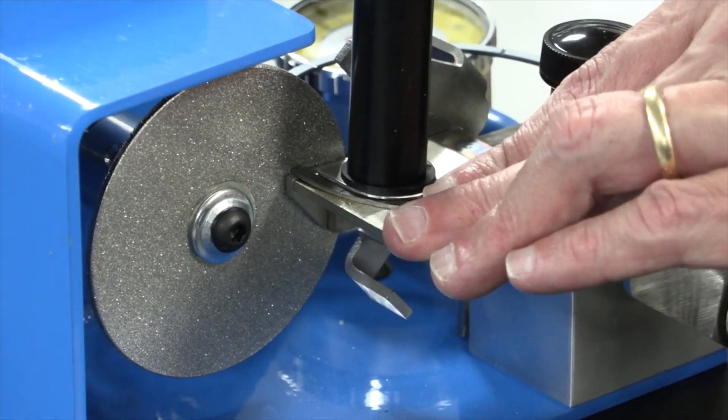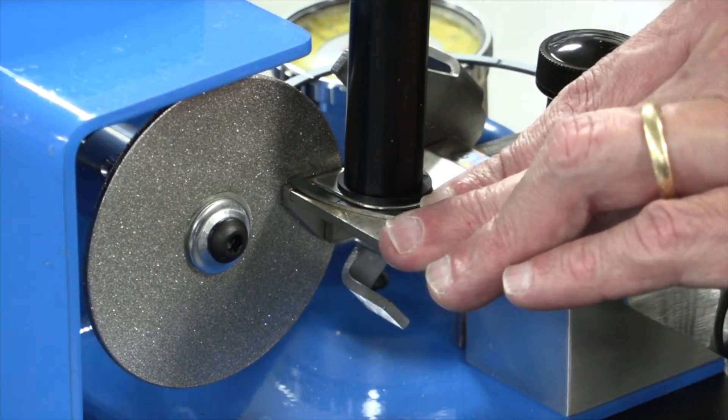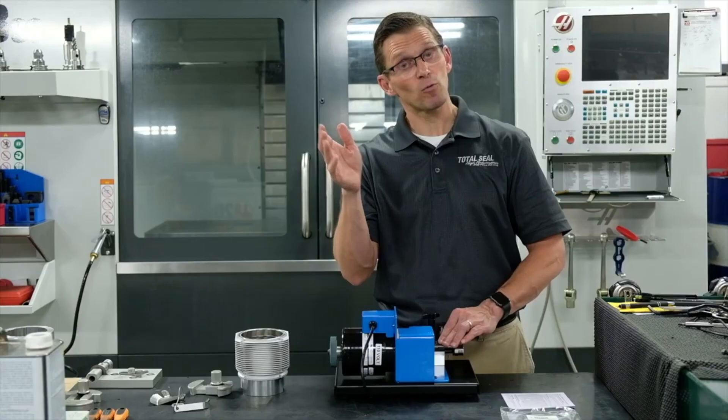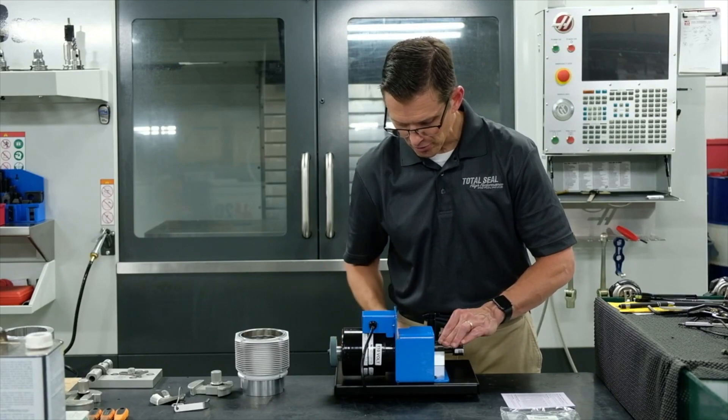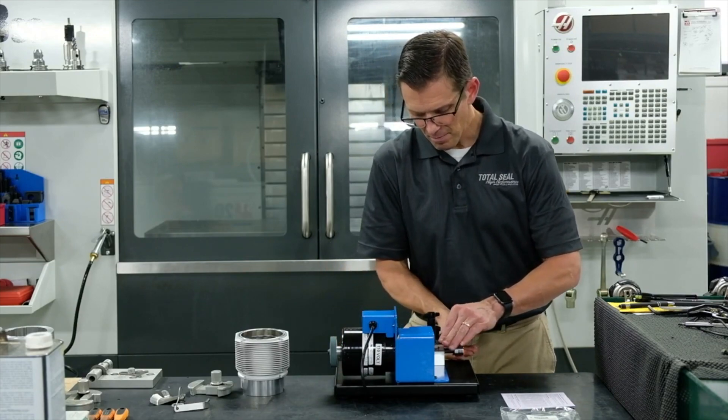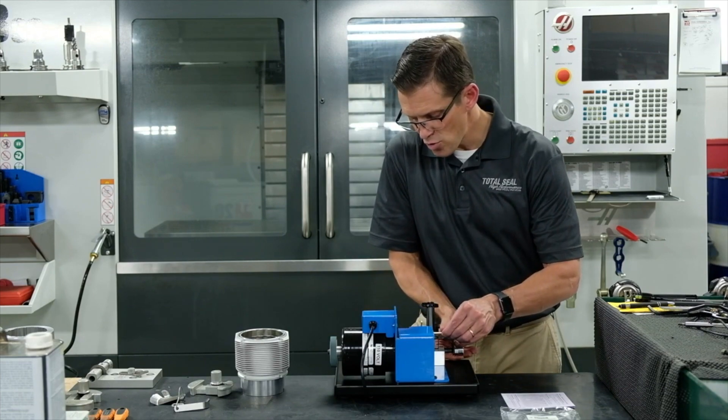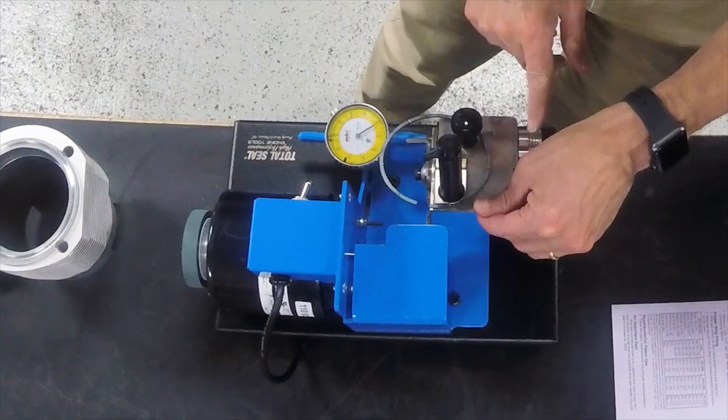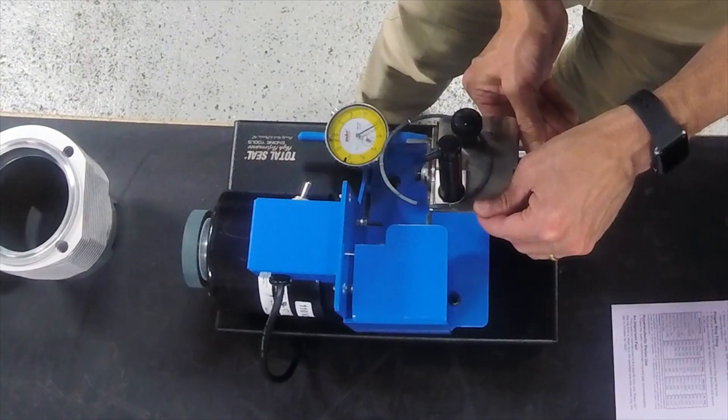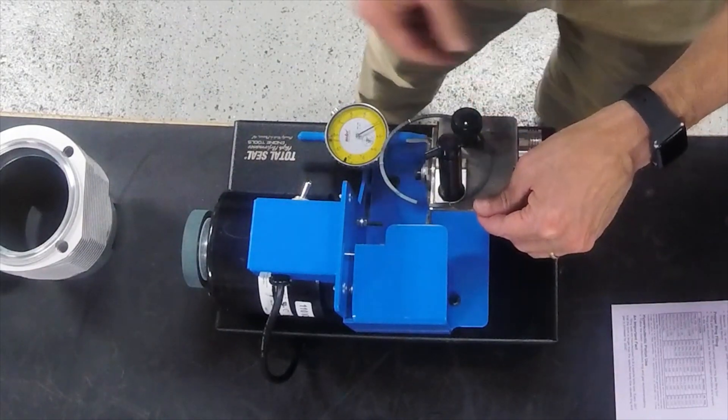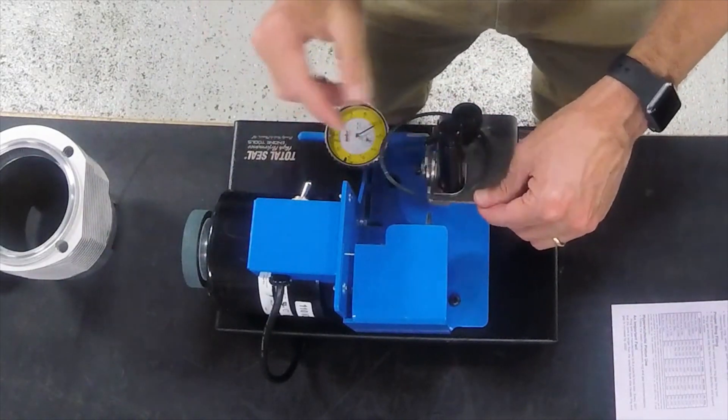If I want to remove, say, two thousandths of material from the ring, which will open up the ring end gap by two thousandths, all I have to do is bring it back just like this, and I move this adjuster knob right down here and move it out to two thousandths. So now the ring has been moved over two thousandths.